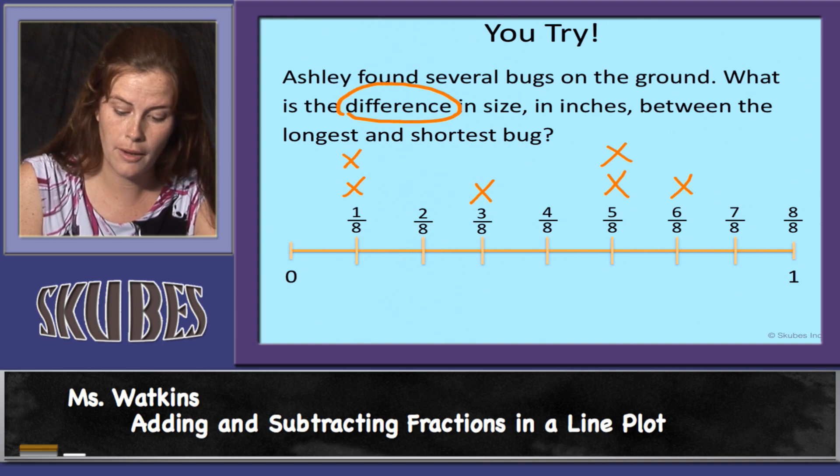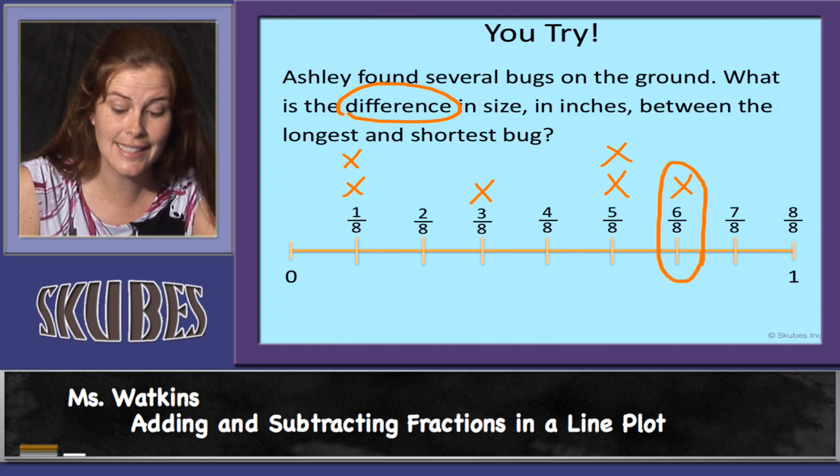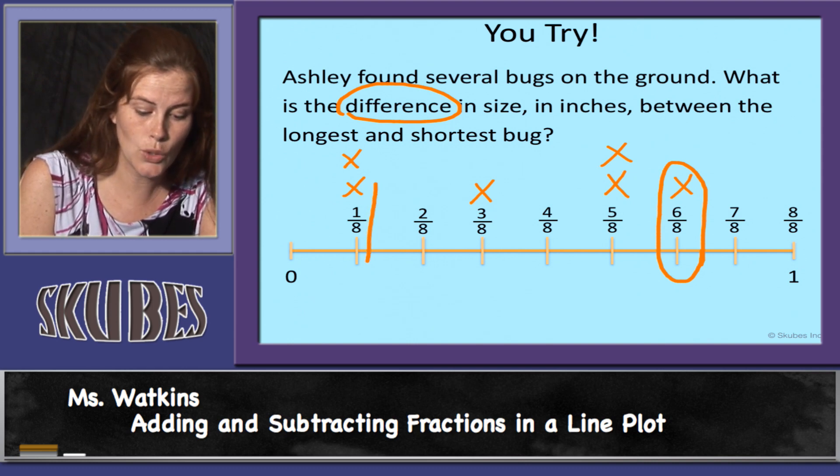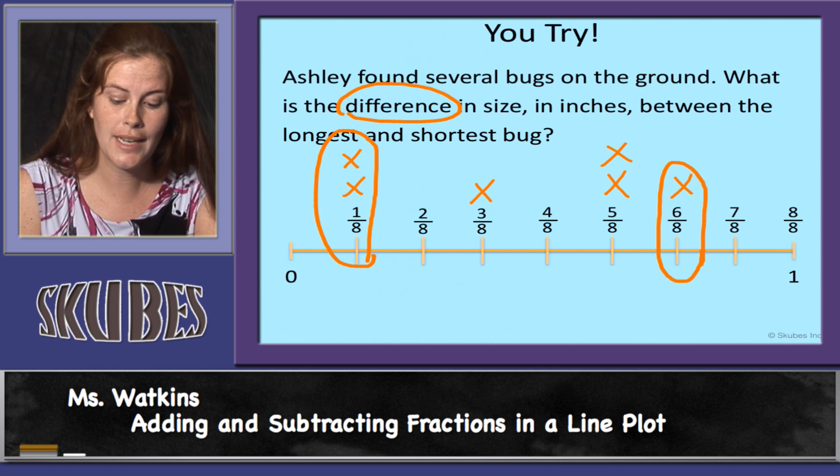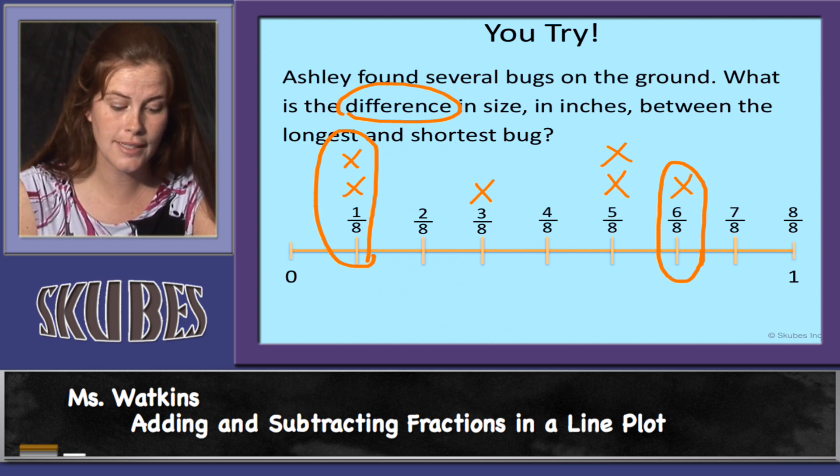The longest bug was six-eighths inches long, and the shortest bugs, there were two. They were one-eighth inches long. So we need to subtract our longest and our shortest.